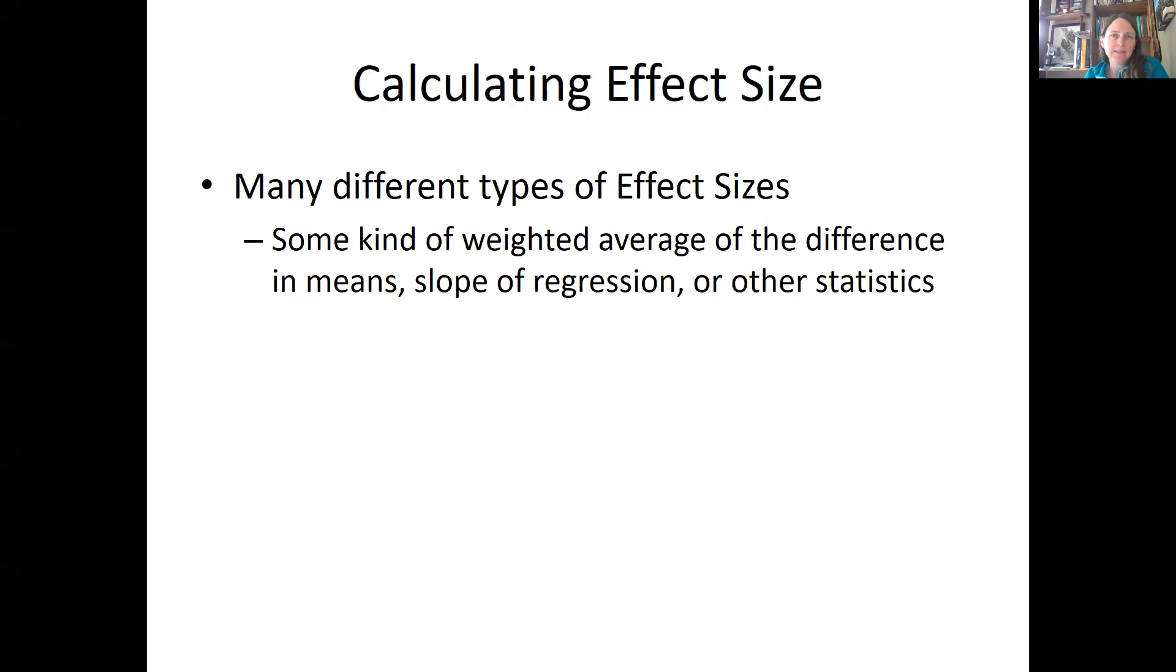So then in terms of calculating the effect size, there are lots of different effect sizes. I'm only going to focus on that Hedges D because it's kind of a simple one and it's easy to use in the program that I'm going to talk about. But basically an effect size is some kind of weighted average of the difference in means between a treatment and control or a slope of a regression line or some other statistic. Now, a meta-analysis is basically running statistics on statistics instead of running statistics on raw data like you're used to. So that's one way to think about it.